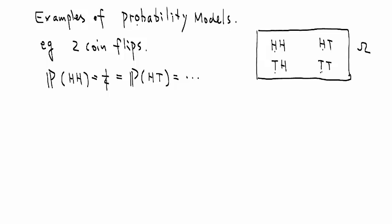This is also a good time to introduce another important concept called an event. An event is a subset of omega. It's a subset of possible outcomes. Some examples.